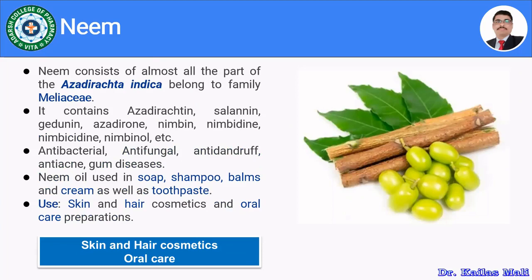The next herbal component is neem. Neem consists of almost all parts of Azadirachta indica belonging to family Meliaceae. It contains mainly azadirachtin, salannin, nimbin, nimbidin, nimbicillin and nimbolide. It has antibacterial, antifungal, anti-dandruff, anti-acne properties, and also has a soothing effect on gum diseases. The neem oil is used to prepare soaps, shampoos, balms, creams as well as toothpaste, meaning it is used in skin cosmetics, hair cosmetics as well as oral hygiene products.